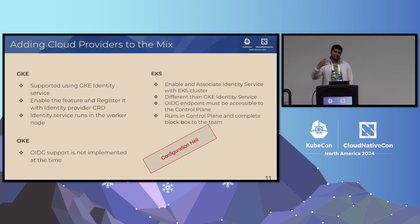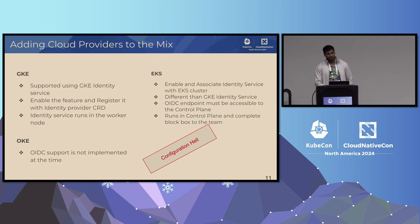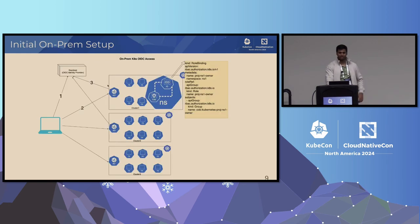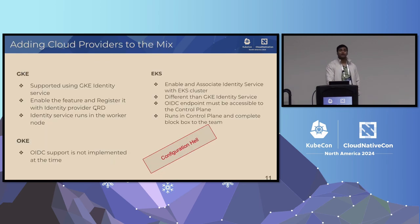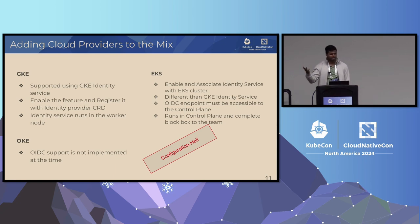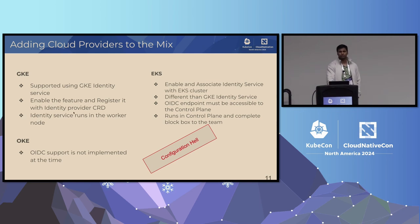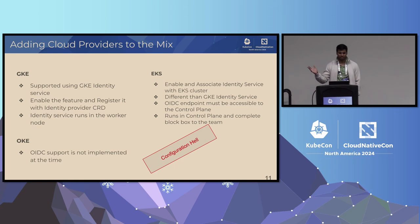Now when you mix cloud providers in, GKE has their own identity service and you have to enable that feature. Once you enable it, instead of OIDC configuration in the API server, they created an operator — you have to provide that OIDC metadata as a CRD: OIDC endpoint, user groups, claim, client ID and client secret. The good thing with GKE is as soon as you provide the CRD, you'll see the identity service pods running in your worker nodes and you can view the logs.